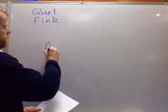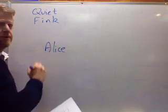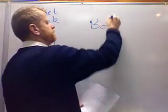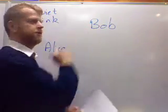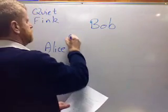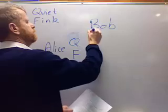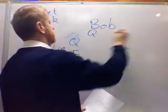We put, generally we'll put one person down on the left, and the other person across the top, and we'll put their options. Alice can be quiet, or can fink, and Bob can be quiet, or can fink.